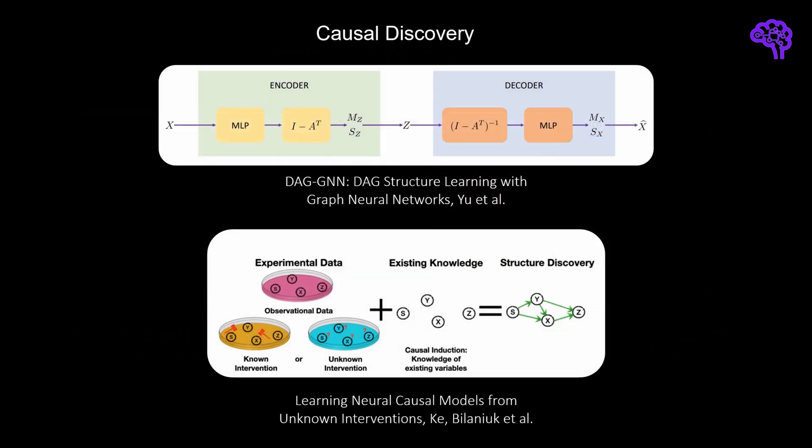There is also some work on causal discovery. For example, DAG-GNN is able to learn a directed acyclic graph, which is the basis for structural causal models. The paper on the bottom aims to combine observational and interventional data to discover the underlying structure of the data generating process. In experiments, it is shown that the model generalizes well to unseen interventions.